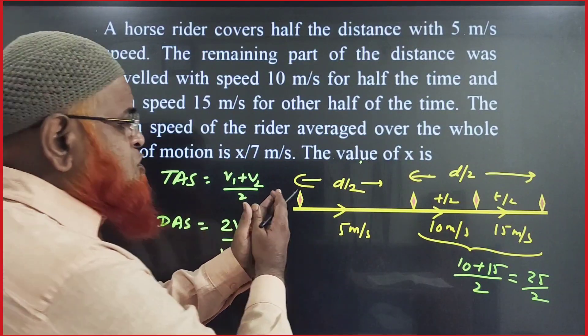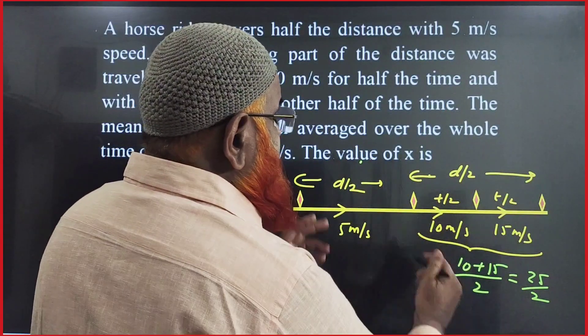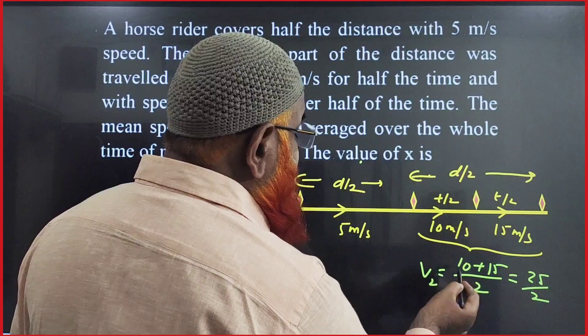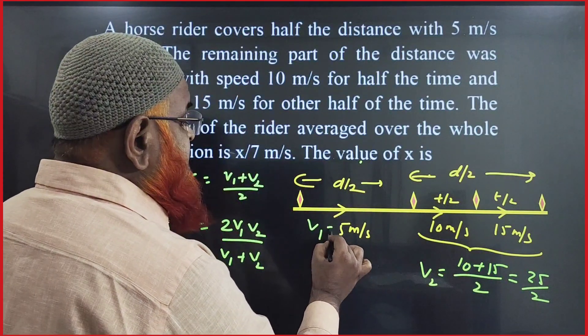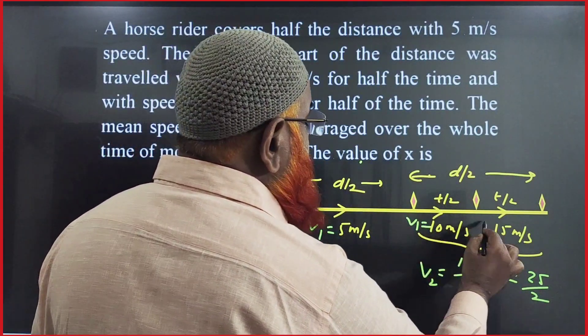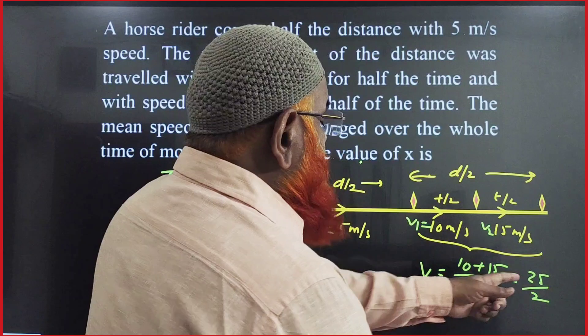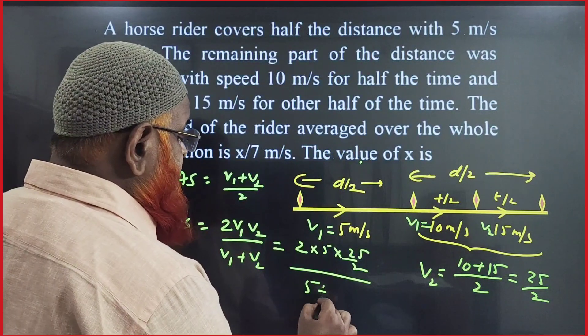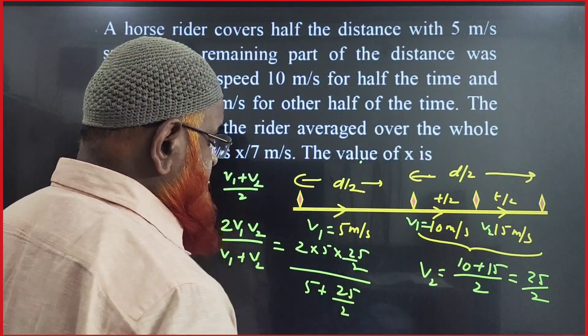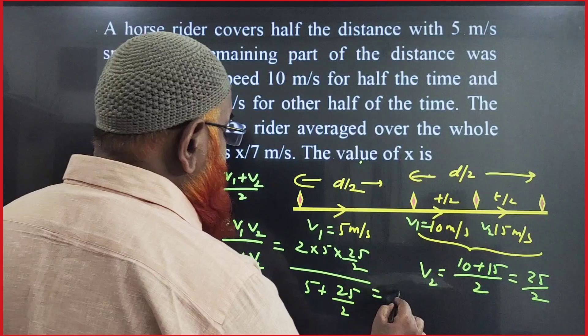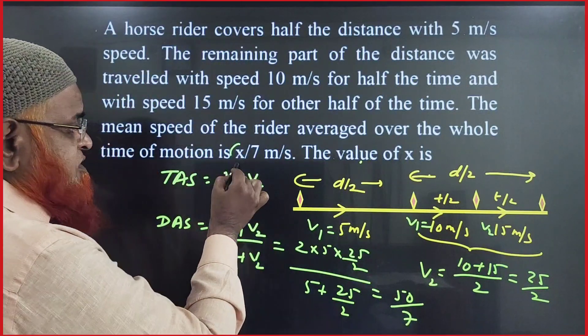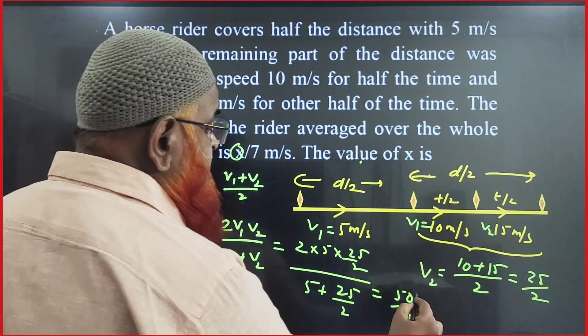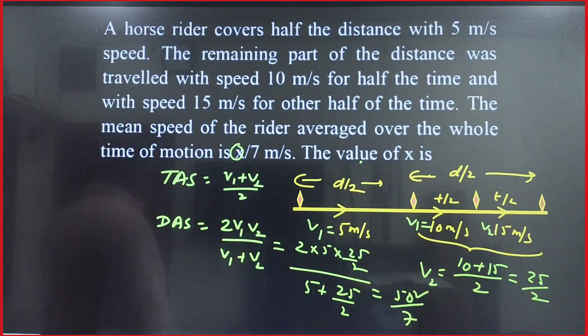Now for the total distance divided into two parts, in the first part v1 is 5, and in the second part v2 is 25/2. Using the distance formula, this combined case gives 2(5)(25/2)/(5 + 25/2). Calculating this yields 50/7. Therefore, the value of x is 50. So 50 is our answer, thank you very much.